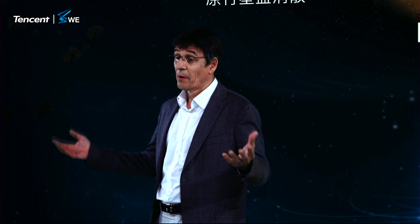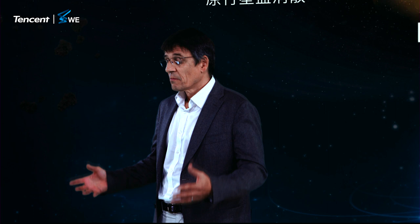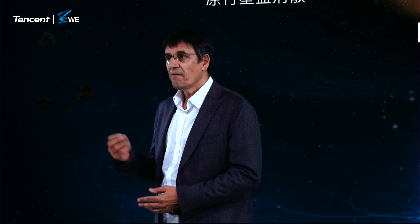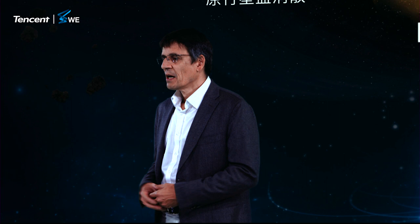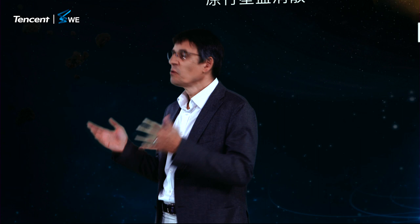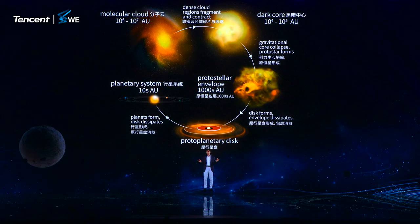So how do we detect planets? A planet is a very faint object next to a star, which is extremely bright. So you cannot take your telescope and look at the star and see the planet — you're completely blinded.